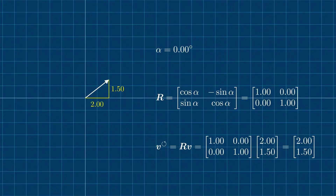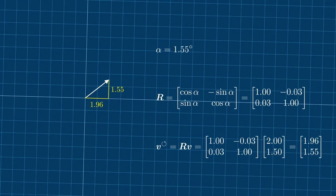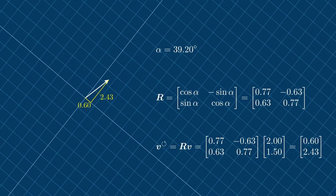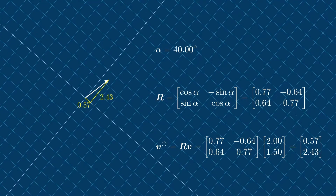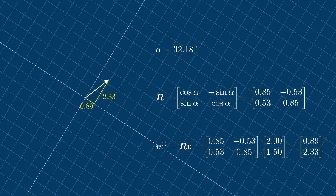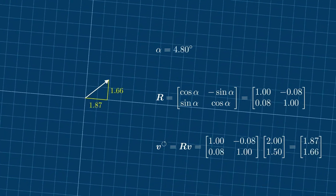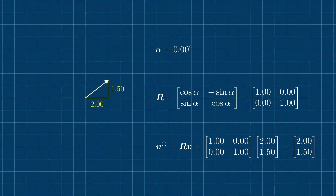As we change alpha, the rotation matrix changes and hence the tensor components in the rotated coordinate system change. When alpha is equal to zero, the rotation matrix reduces to the identity matrix and the rotated components are identical to the original ones.